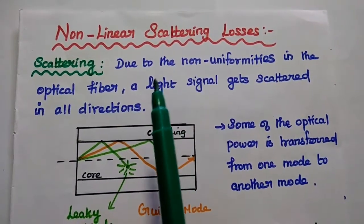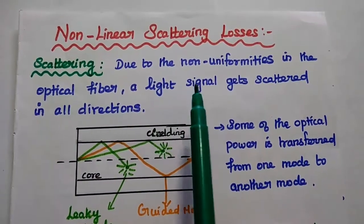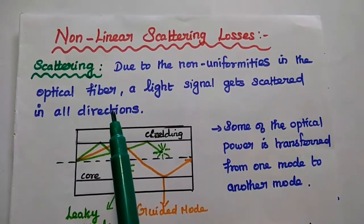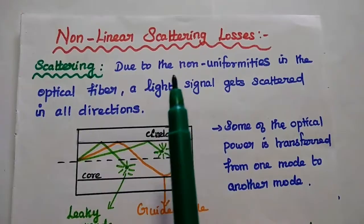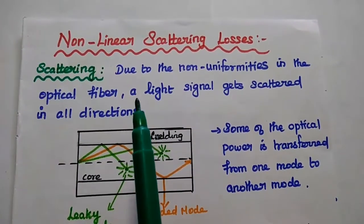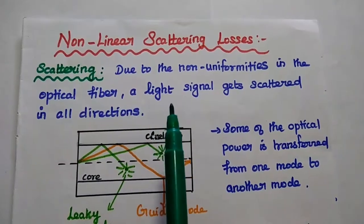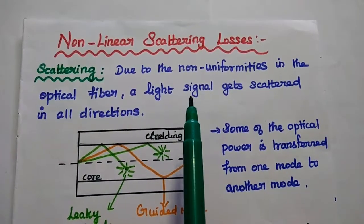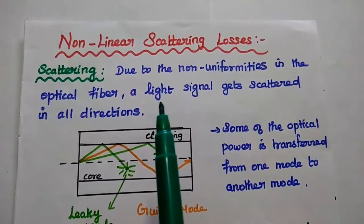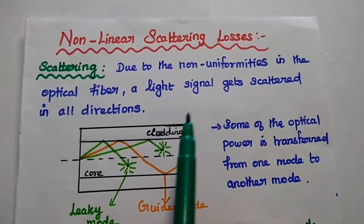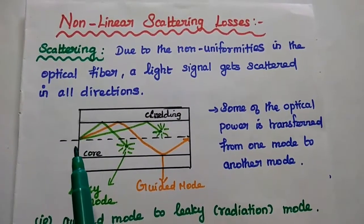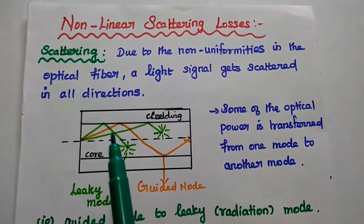We are going to discuss non-linear scattering losses in detail. Let's start with the basics of scattering losses. Due to the non-uniformities in the optical fiber, like variations in the density of fiber materials and compositional structural fluctuations, the light signal gets scattered in all directions. When a light signal enters the fiber cable,